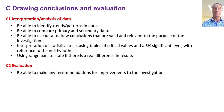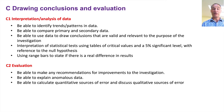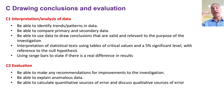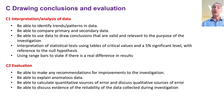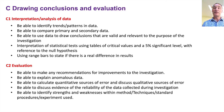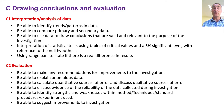Finally, evaluation. You'll be able to make recommendations for how to improve the investigation. You should be able to explain anomalous results. You should be able to calculate quantitative sources of error — that means percentage error of the balance that you use. And also discuss qualitative sources of error, for instance not accounting for parallax when reading a measuring instrument. You should be able to discuss evidence of the reliability of data collected during the investigation and give strengths and weaknesses to a given method, including techniques, standard procedures, etc. And finally, be able to suggest improvements to an investigation.